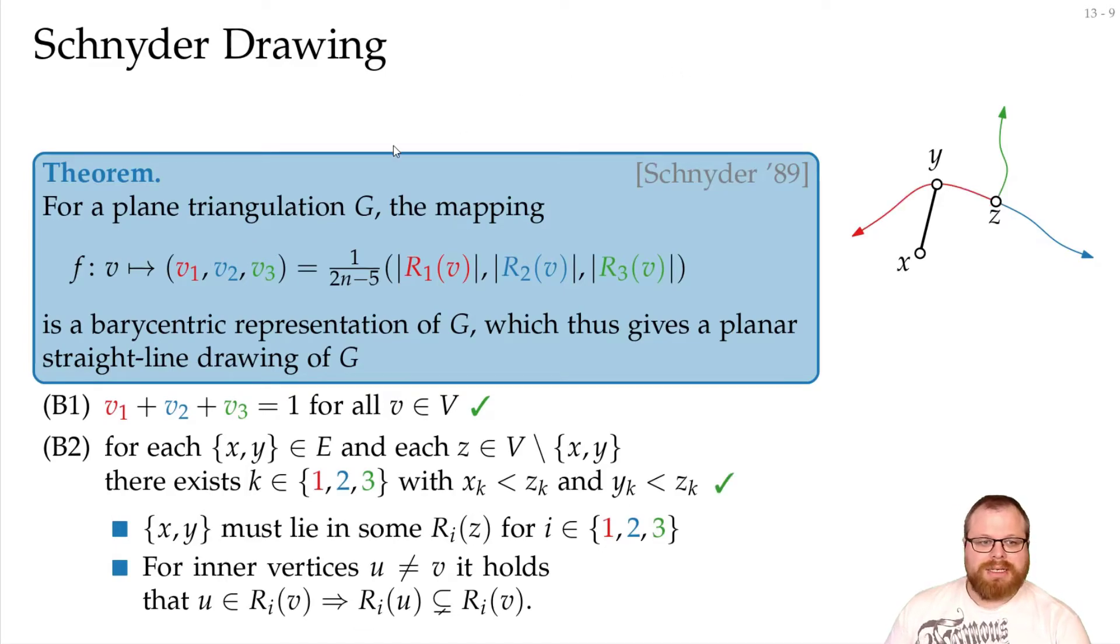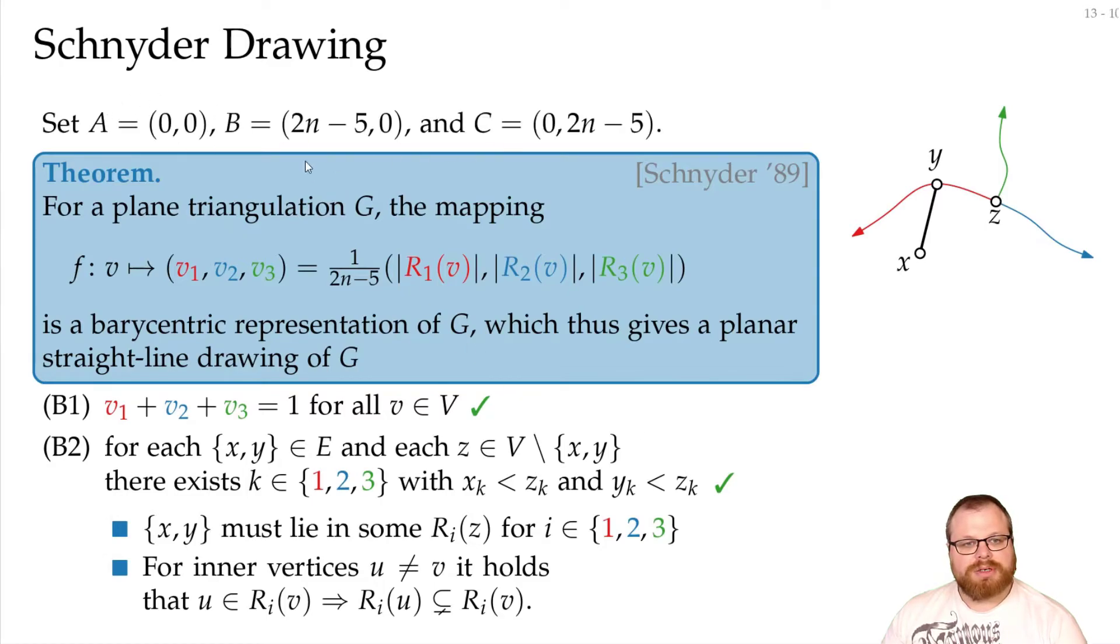And this is the second property that we need. And that's everything. Now we have a barycentric representation of g, which is planar and a straight line. Again, we still have to put it onto the grid, but that is quite easy.